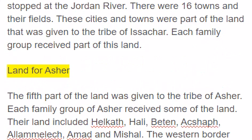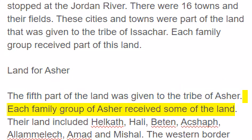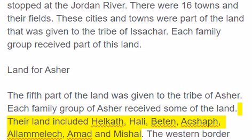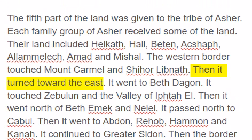Land for Asher. The fifth part of the land was given to the tribe of Asher. Each family group of Asher received some of the land. Their land included Helkoth, Hali, Bitton, Akshaif, Alamelech, Ahmed and Mishal. The western border touched Mount Carmel and Sheer-Libnath.